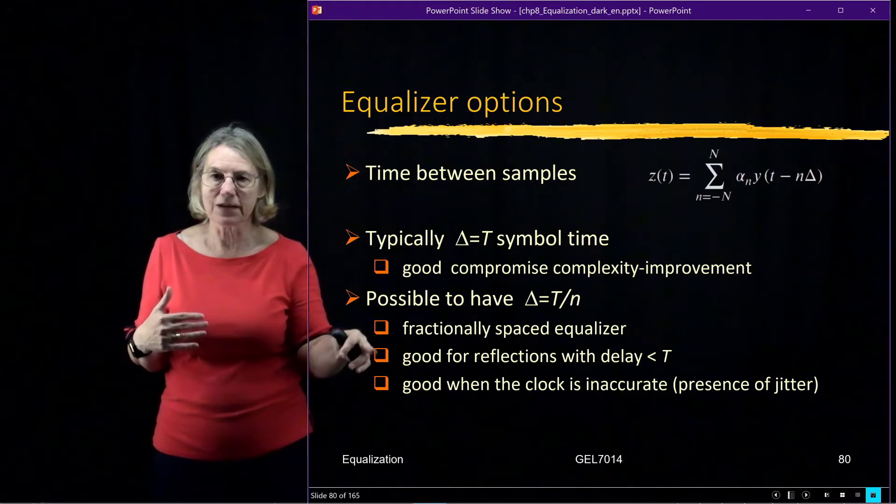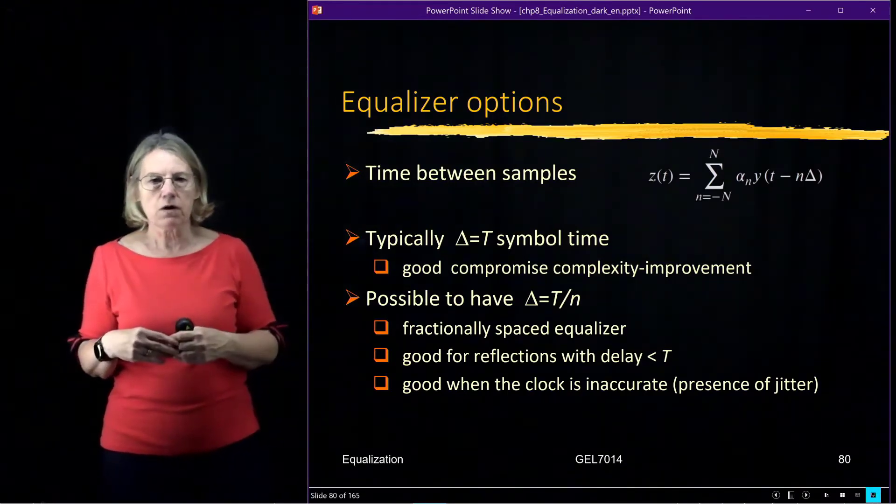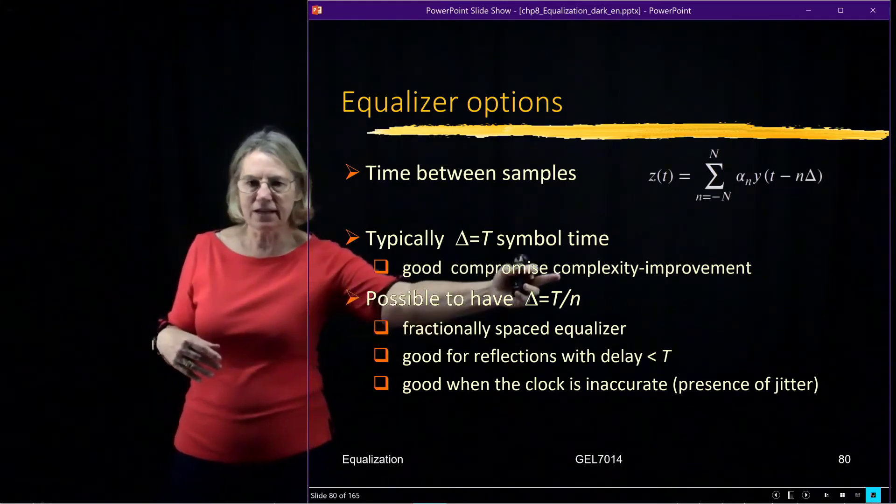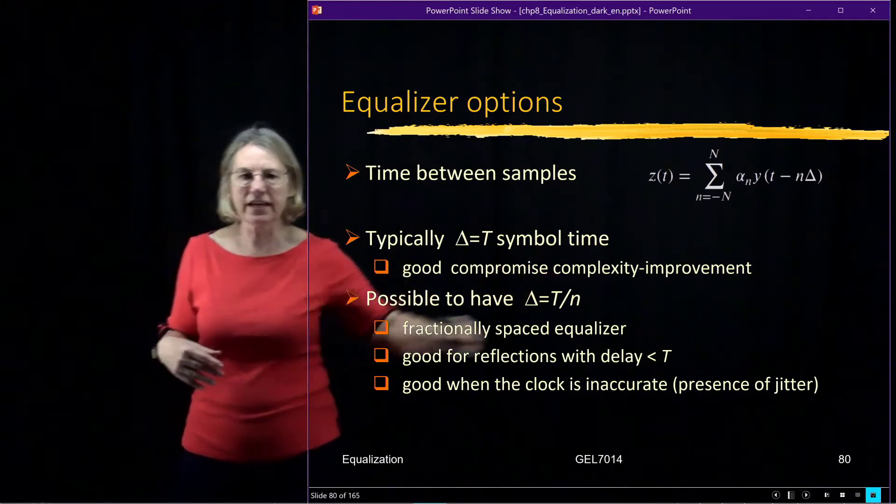Because otherwise, I'm not going to see it because I'm not sampling fast enough. So that's a kind of example where the increase in complexity is really required in order to get a good improvement.